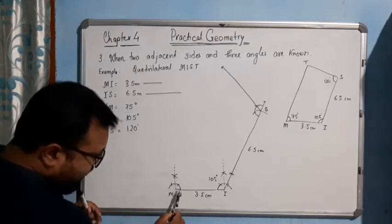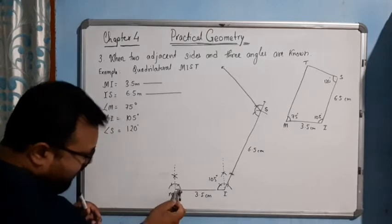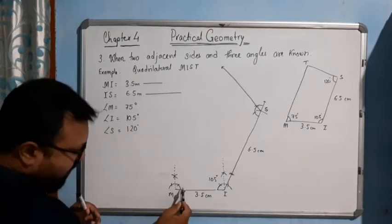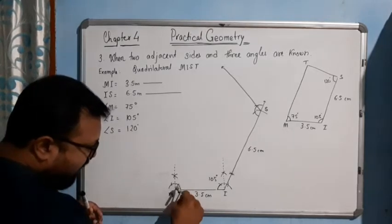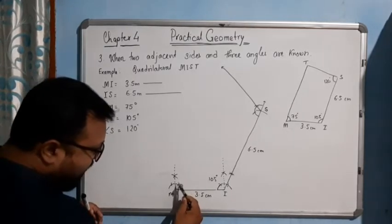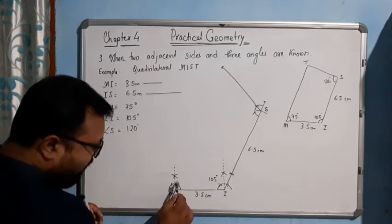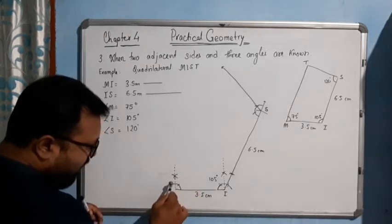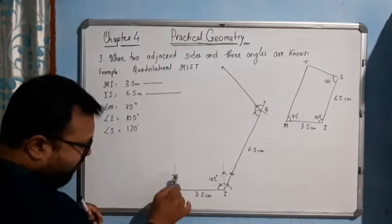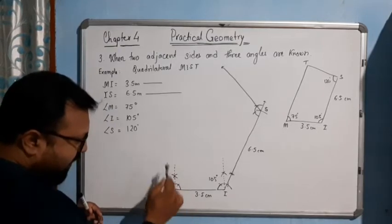Draw the arc like this. Place the pin here and put one arc. Again place the pin here and put another arc. Again place the pin here and put another arc. From these two arc intersections, draw one arc here and one arc here. If you join this line, this will be 90 degrees.